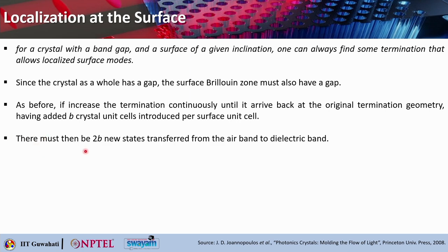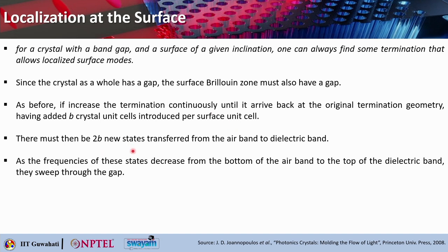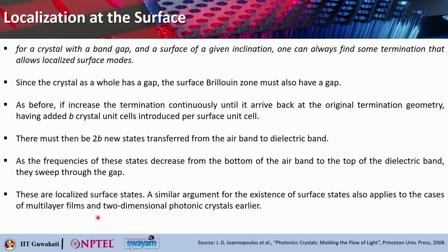Since the crystal has a bandgap, the surface Brillouin zone must also have a gap. If you increase the termination continuously until it arrives back at the original termination geometry, having added B crystal unit cells per surface unit cell, then there must be 2B new states transferred from the air band to the dielectric band. As the frequencies of these states decrease from the bottom of the air band to the top of the dielectric band, they sweep through the gap — these are the localized surface states. A similar argument for surface states also applies to multilayer films and two-dimensional photonic crystals.